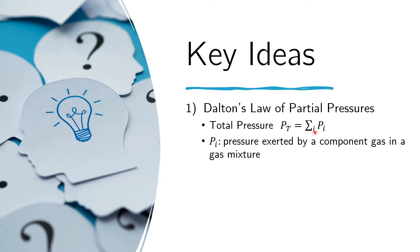In this case, we only have water and nitrogen, so we only have two partial pressures involved. Partial pressure is the pressure exerted by a component gas in a gas mixture. Nitrogen will exert some pressure, and the water vapor will also exert some pressure. The sum of the pressure exerted by nitrogen and water vapor equals the total pressure of the mixture — that is Dalton's Law of Partial Pressures.